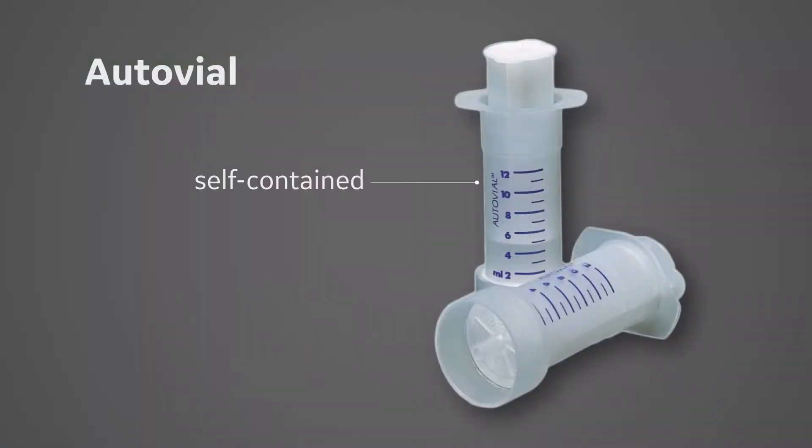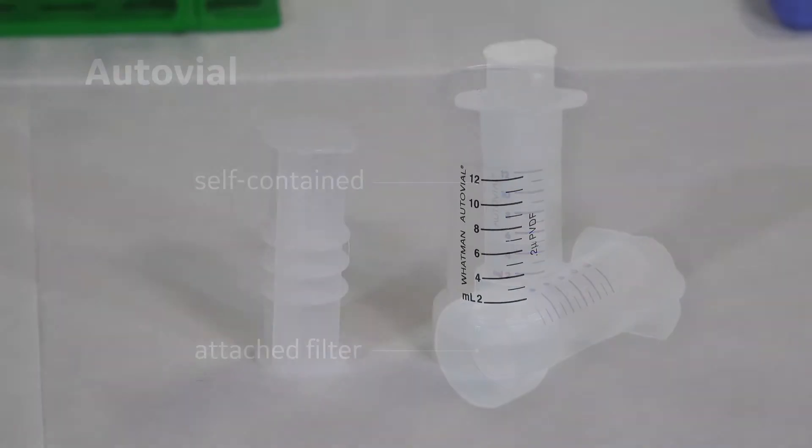Now let's switch to the autovial. The autovial is one self-contained unit with the syringe filter attached to the base. A single unit for ease of ordering that even comes with a handy barrel stand for convenience.